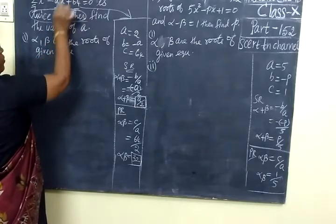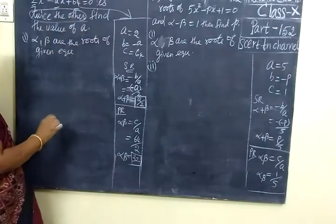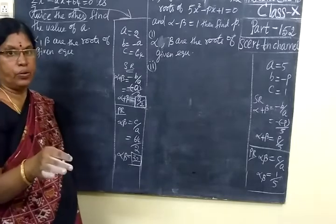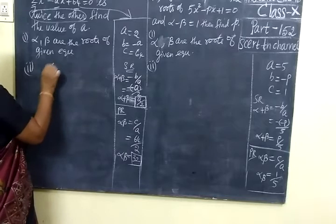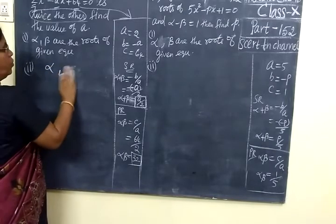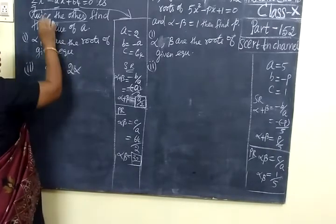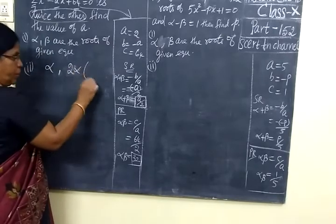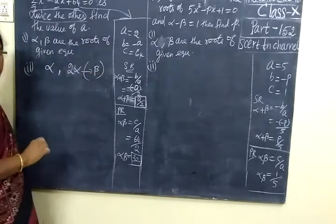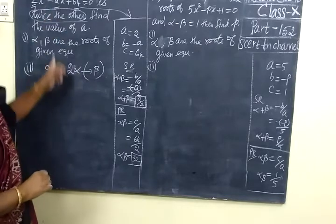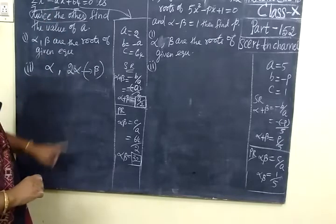One root is twice the other. For the required equation, the roots are: one root is alpha value and the other root is 2 alpha. Twice means 2 alpha. This is nothing but beta. Beta value is 2 alpha. So one root is alpha, another root is 2 alpha.